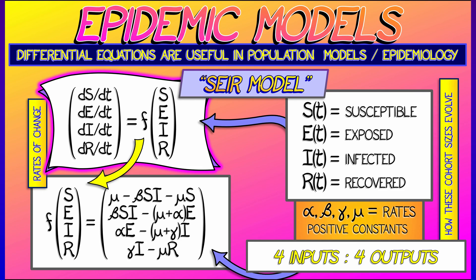Now, I don't really care about the details of the model as much as I care about the fact that it has four inputs and four outputs. And this is one of the simplest models in epidemiology. There are much more complicated models out there that have more inputs and outputs.